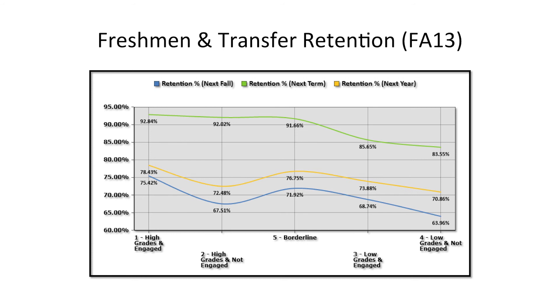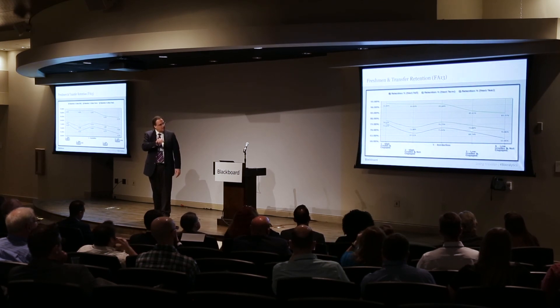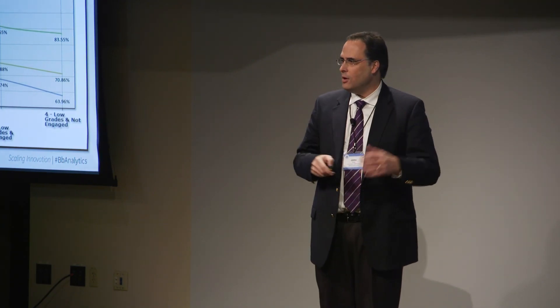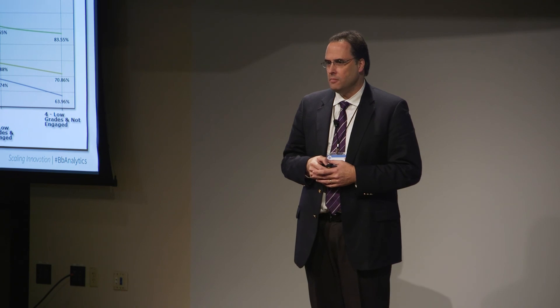The yellow line shows whether they came back at any time during the next year, even if they skipped the fall. Down at the bottom right are students who had low grades and were not engaged in terms of what they did with the LMS — and by engagement and activity, I'm talking about hits and clicks. What was interesting is that students who had low grades but were engaged were retained at slightly higher rates than students who had high grades but were not engaged. I'll leave it to you to decide which group you might intervene with, but it was an interesting layout of the relationship between engagement and grades. Thank you very much.